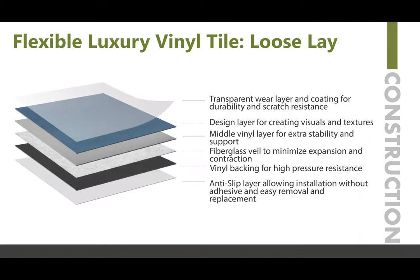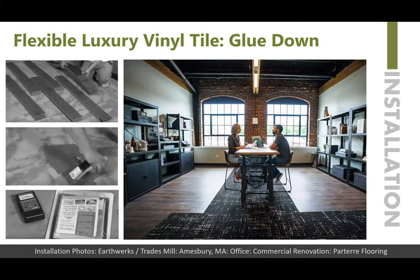For loose lay LVT, it has an anti-slip layer allowing installation without adhesive and easy removal and replacement, though some adhesive may be needed on the edges to start. It has a vinyl backing for high pressure resistance, a fiberglass veil to minimize expansion and contraction, a middle vinyl layer for extra stability and support, a design layer for visuals and textures, and a transparent wear layer on top. One example shows LVT used in a pre-revolutionary mill building that had been unoccupied for 50 years — LVT was used for durability while preserving the look and feel of the old redeveloped building.